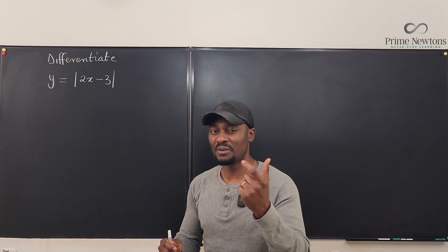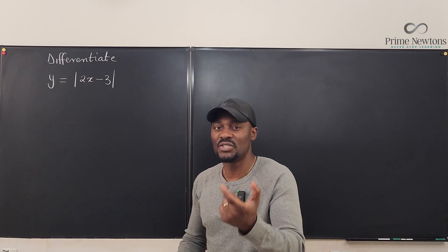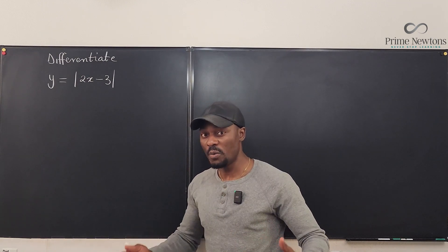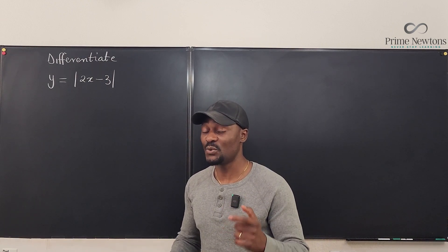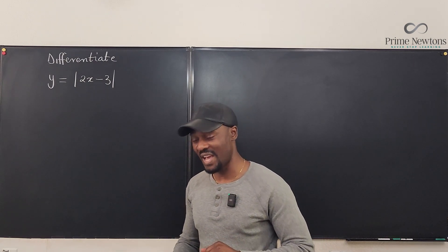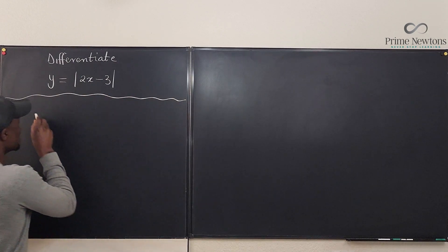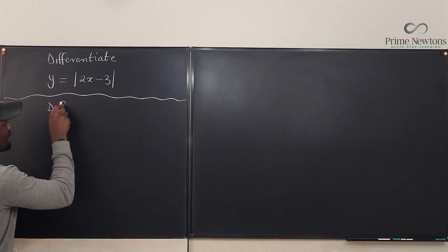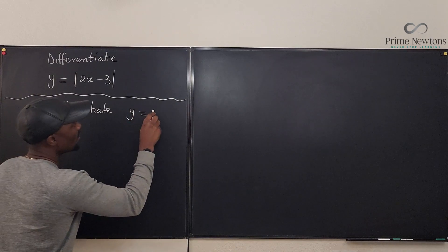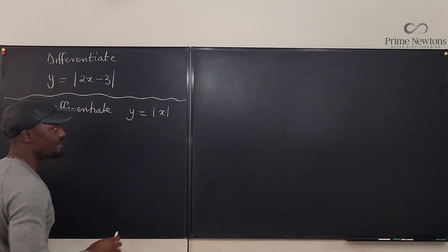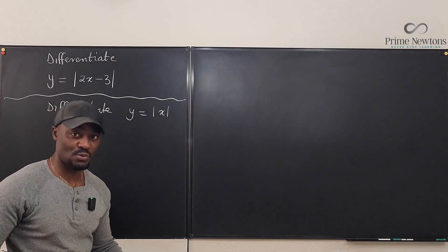Before we differentiate the original problem, let's differentiate something simpler to understand. Let's differentiate x. Normally, if we differentiate x we get 1, but if we differentiate the absolute value of x, we don't get 1. So let's say y equals the absolute value of x. The answer is not 1 and the answer is not minus 1.